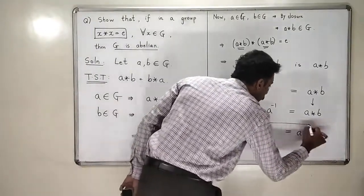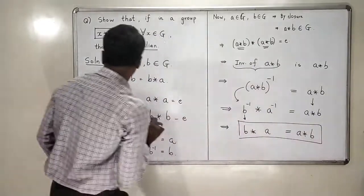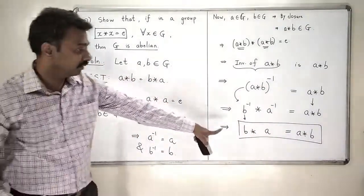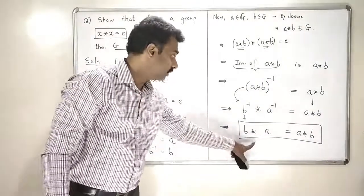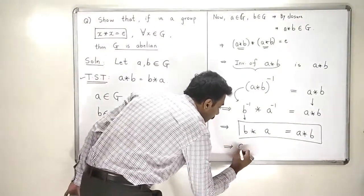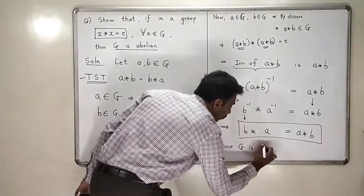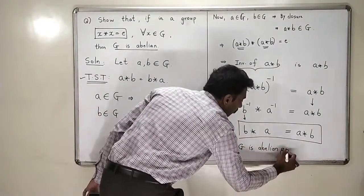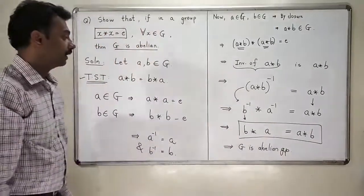We wanted this. But a star b must be equal to b star a. So we have reached that final conclusion. This means that G is an abelian group. This finishes our exercise.